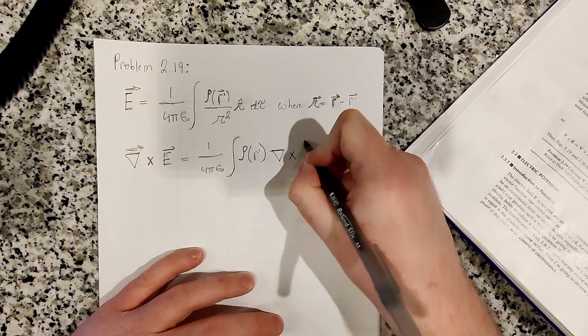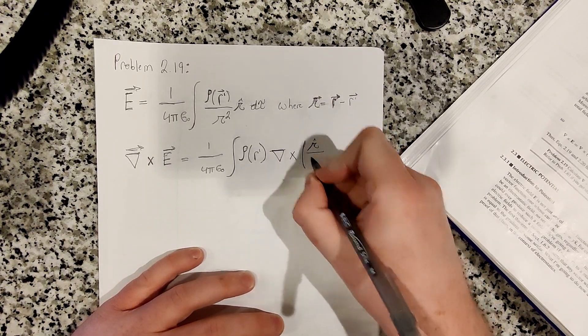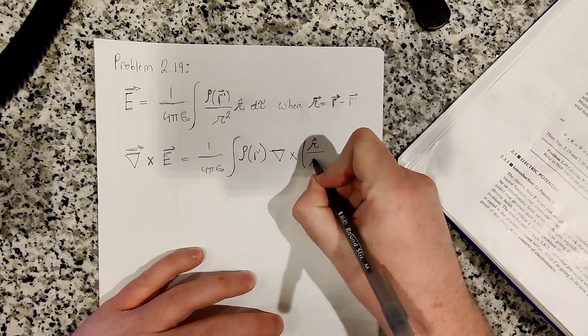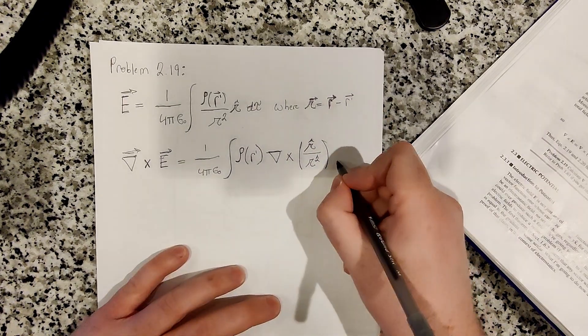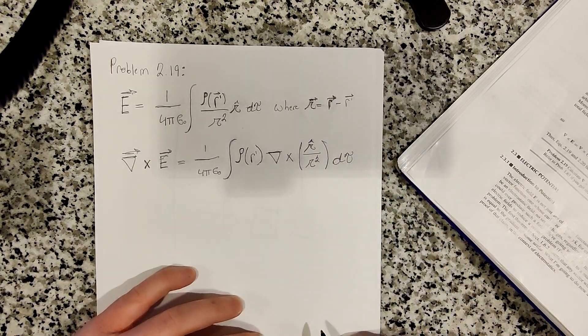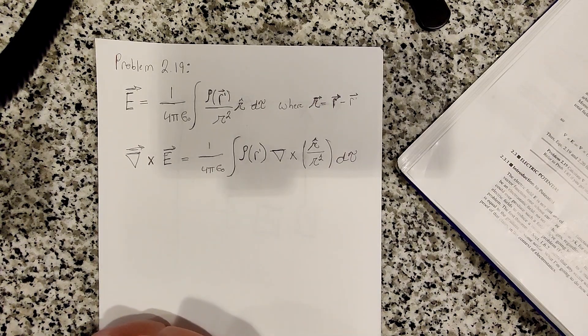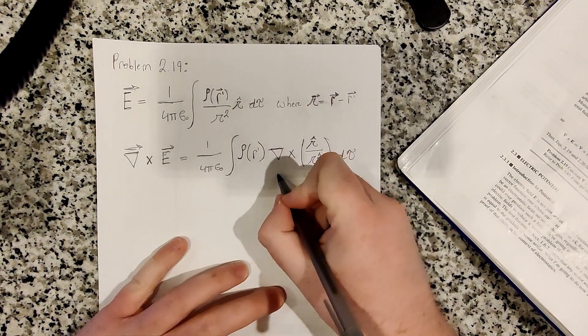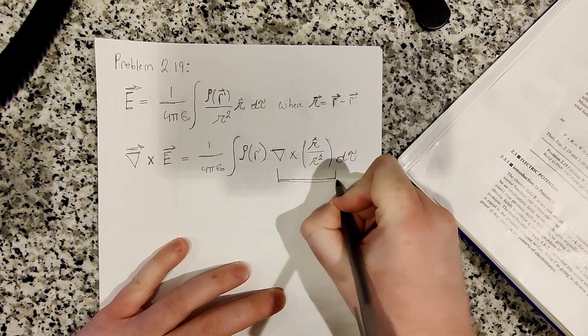So this is the curl of script r hat over the magnitude of script r squared, and then d tau. All right, so at this point, the problem just comes down to evaluating this expression.